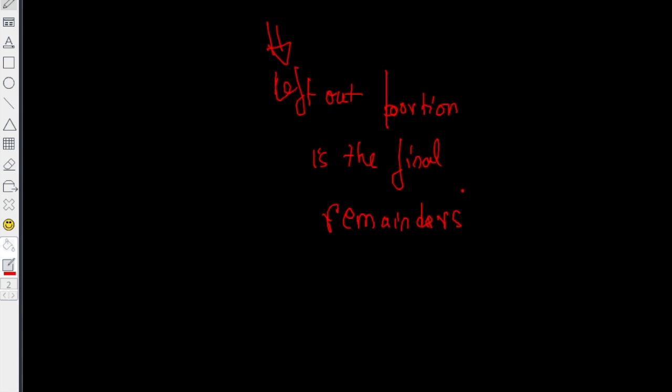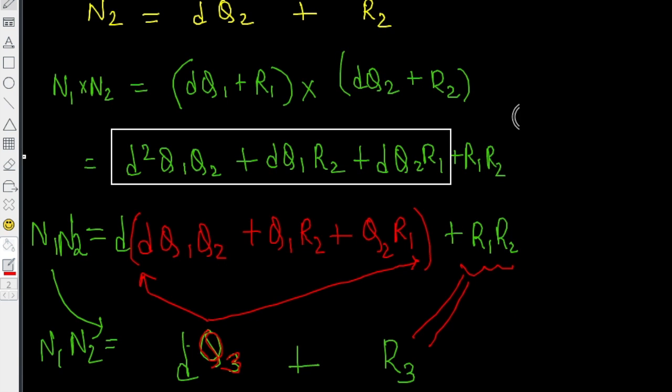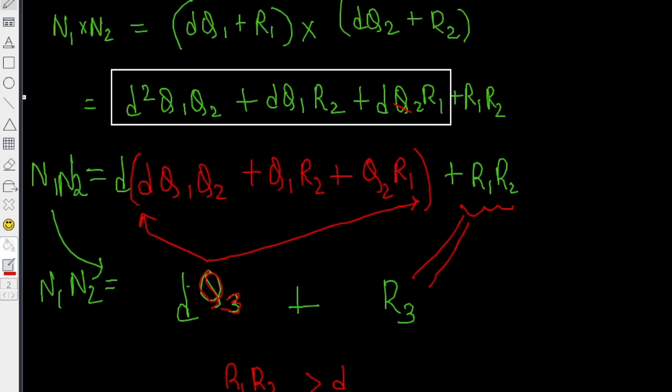Our guess was that if I multiply, if I divide n1 n2 by D, if I divide the product of the numbers by the divisor, then the remainder is either the product of the initial remainders.